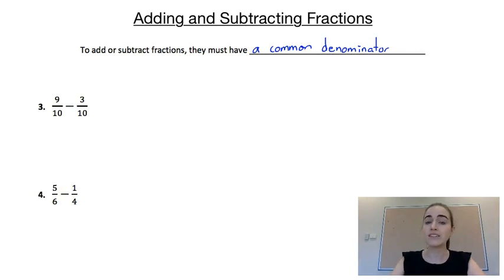Our next two examples are subtractions instead. So for question 3, we've got 9/10 minus 3/10. Now again, because they already have a common denominator, we can just subtract numerators. So 9 minus 3, we'd end up with 6/10.